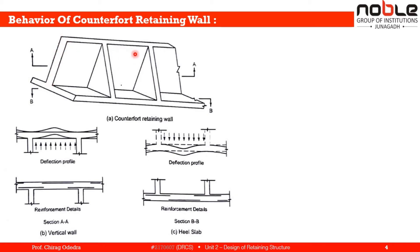The vertical wall is deflected due to lateral earth pressure. Tension is on the earth-facing side and compression on the other side; at the counterforts, tension is on the bottom and compression on top. We provide reinforcement where there is tension — at the face towards the retained earth on the wall panel, and at the bottom near the counterforts.